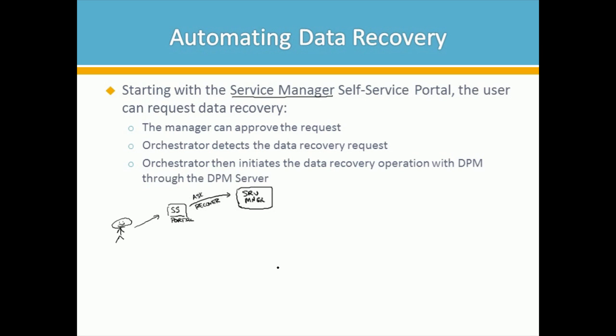We are talking about some automation. It doesn't have to always be exactly in these steps, but we want to talk about how this all works together. So they make a request to recover a file — that's kind of an incident, it could be a problem. Now, somewhere there's a manager whose job, depending on the level of automation, may have to give their OK on the approval request.